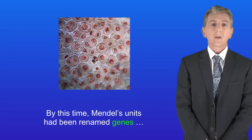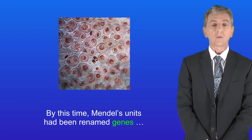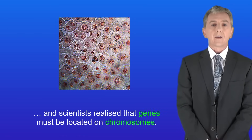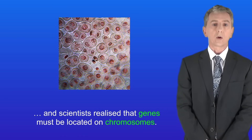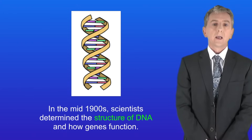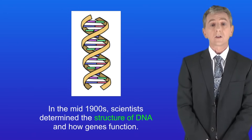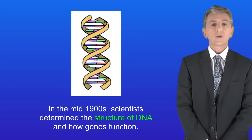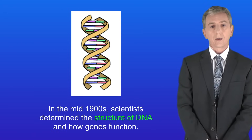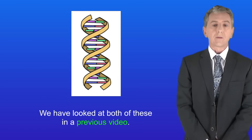By this time Mendel's units had been renamed genes and scientists realised that genes must be located on chromosomes. In the mid 1900s scientists determined the structure of DNA and how genes function, which we've looked at in a previous video.